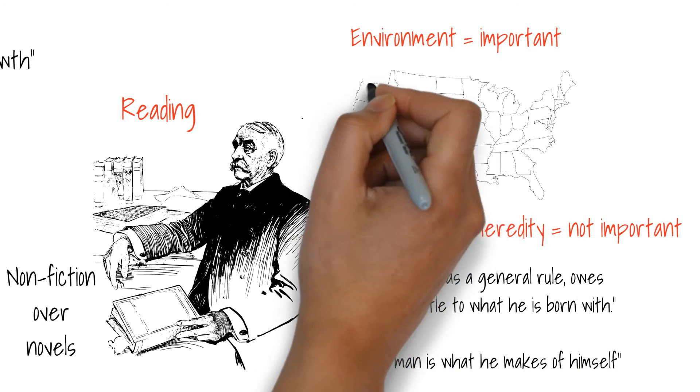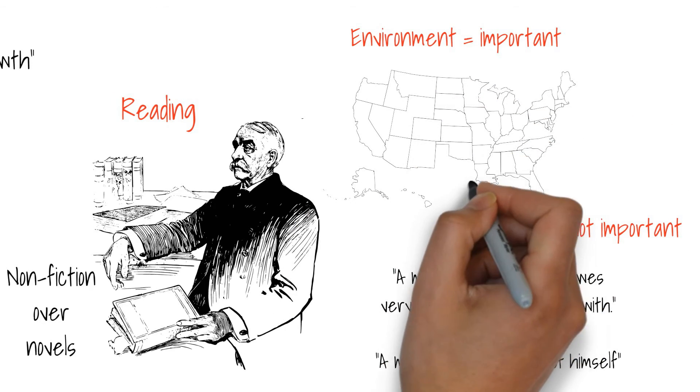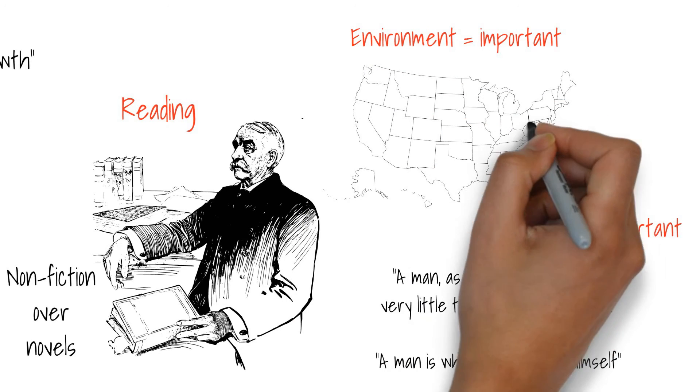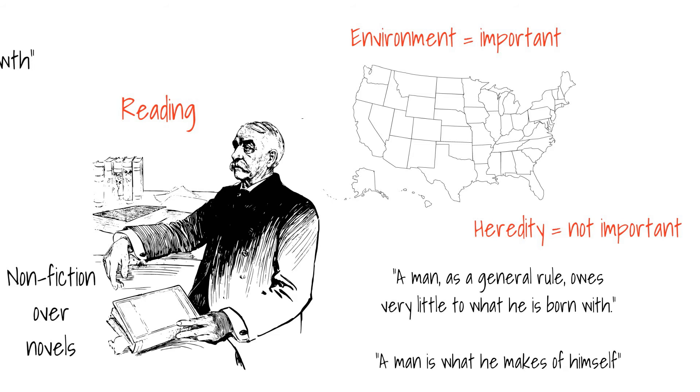It took Bell nine years of experimentation and research before he produced his first telephone in 1876. The Bell Telephone Company was created and made Alexander Graham Bell a very rich man.